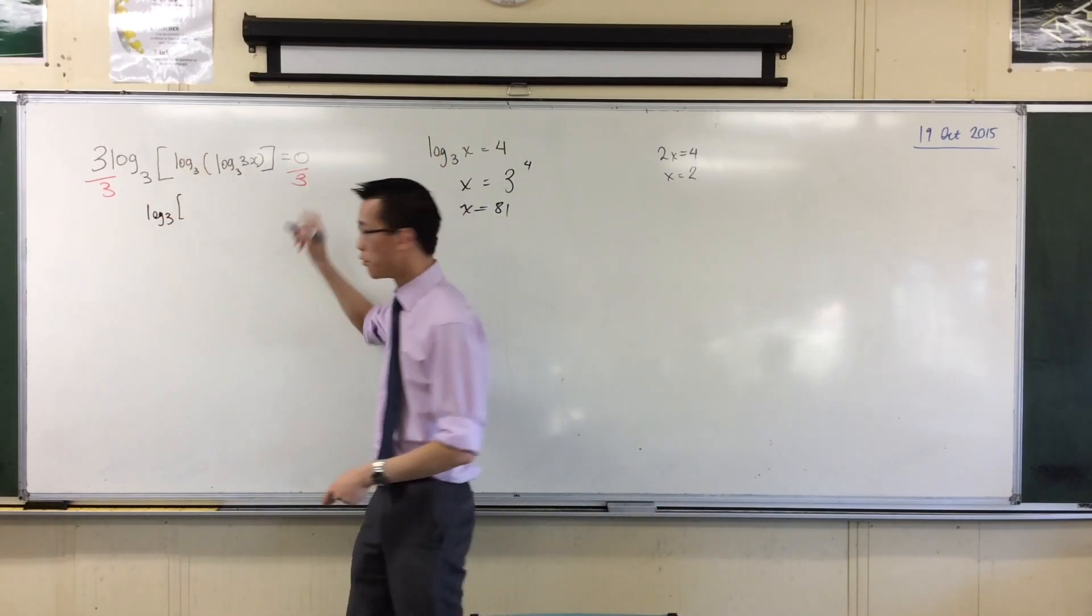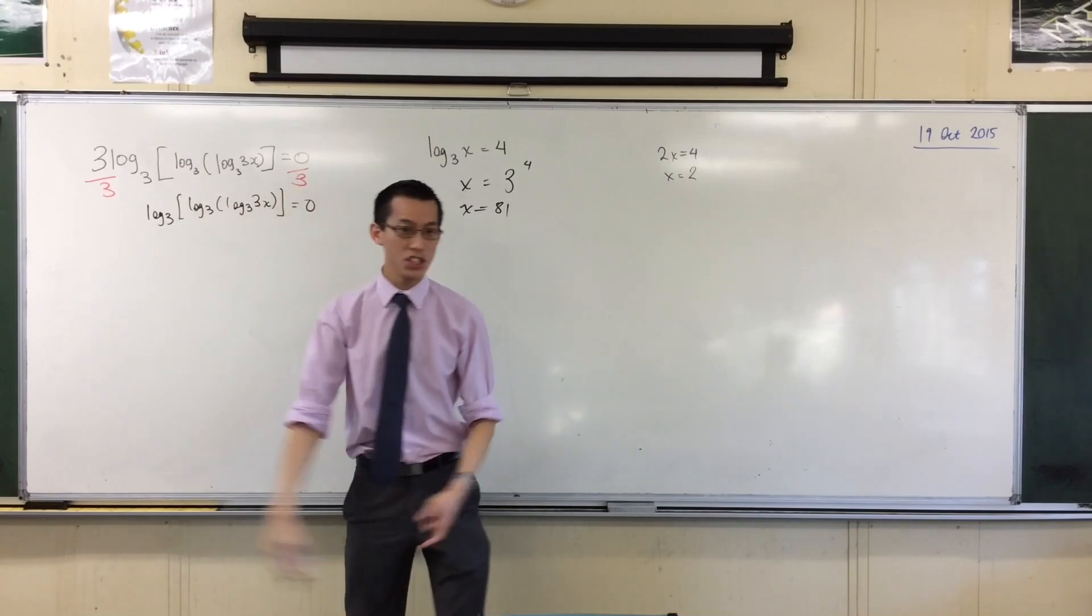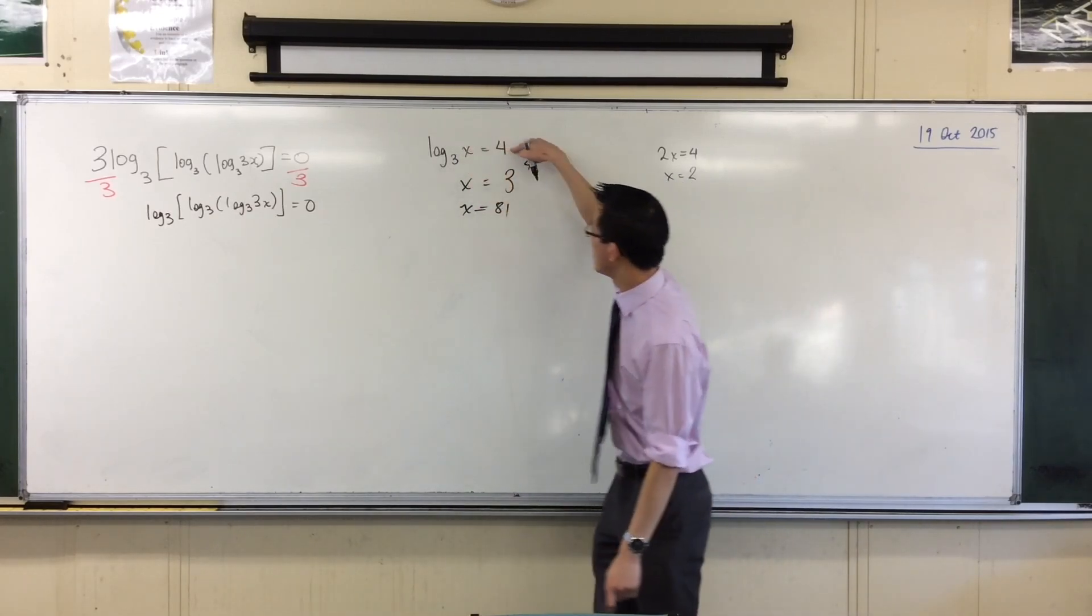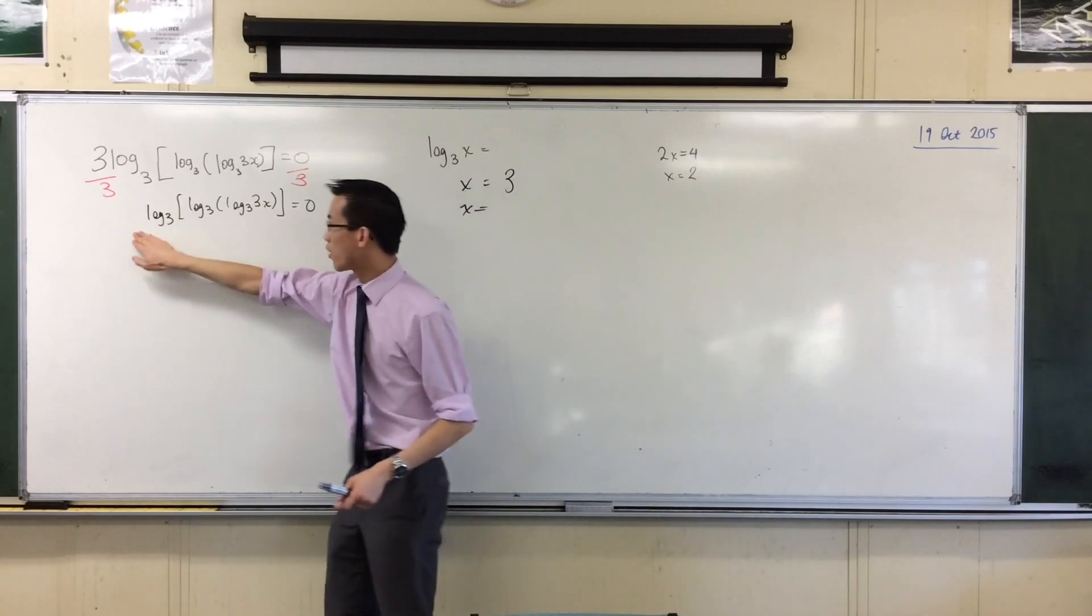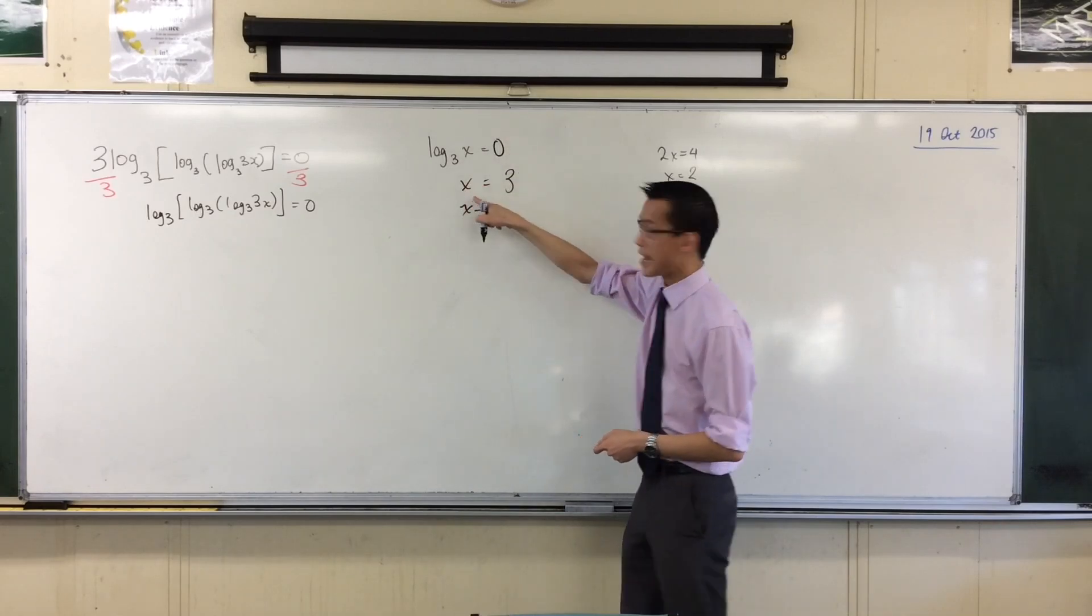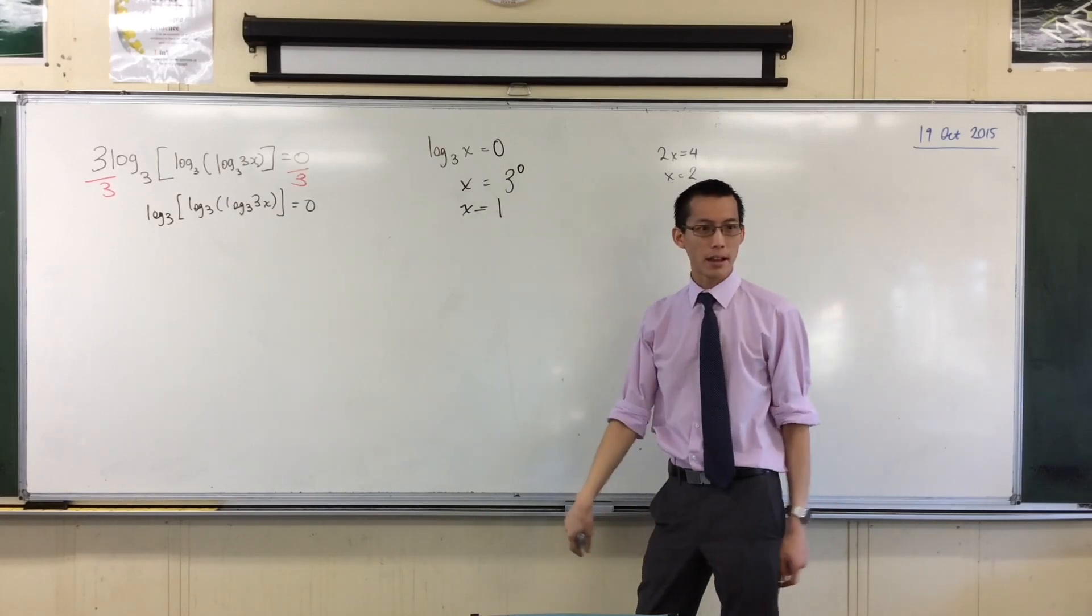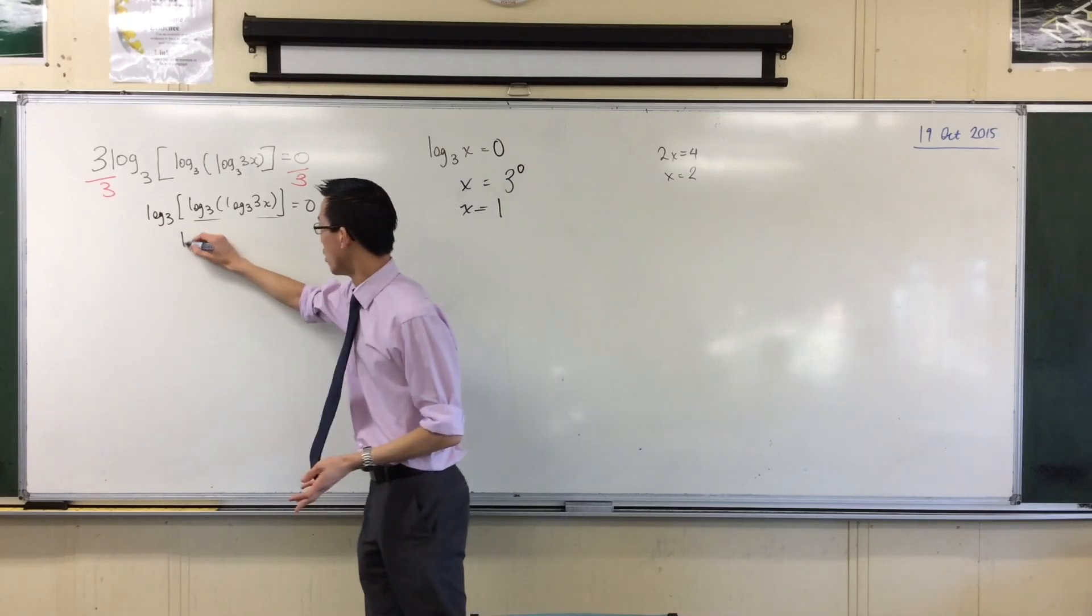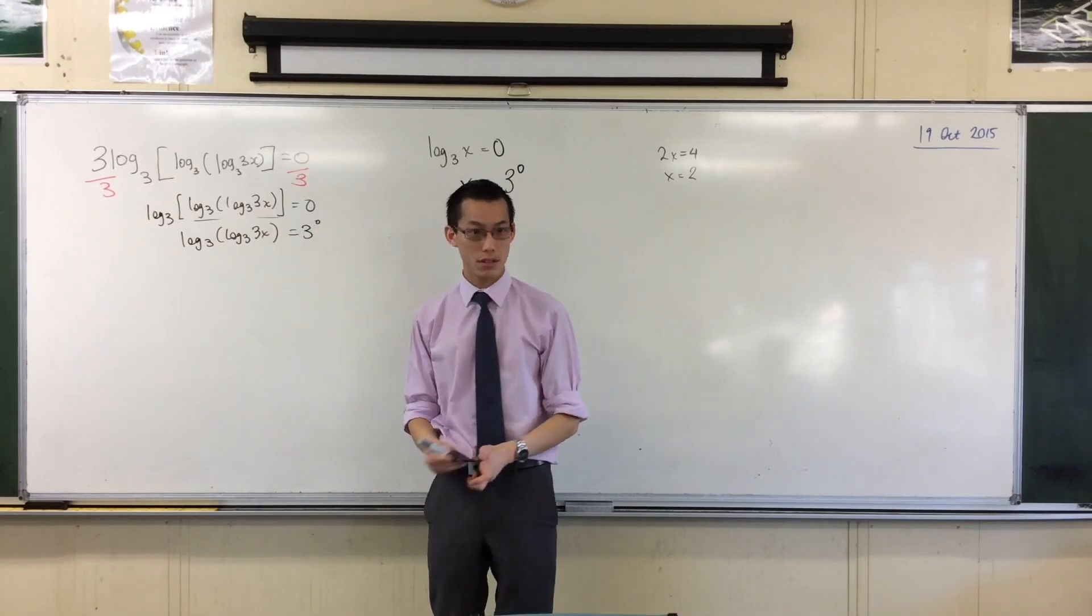So I get log base 3 of this awful mess. Log base 3 of log base 3 of 3x, and that's still equal to 0. Now what you've got here is exactly what I had here, just with the 0 on the right-hand side. So if I just change this a little bit, you can see I have log base 3 of something, I'll call that my x, is equal to 0. So therefore, the next line is 3 to the power of 0 should be up there. What's 3 to the power of 0 again? It's just 1.